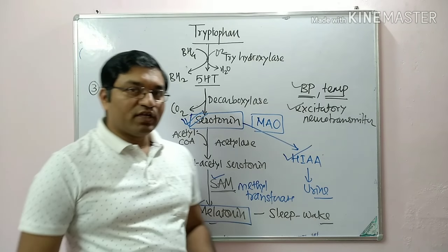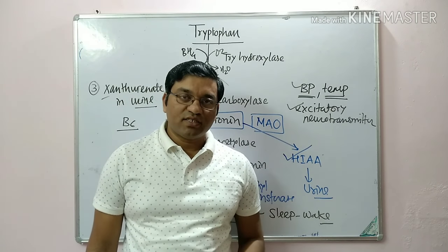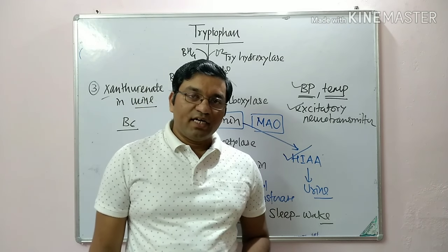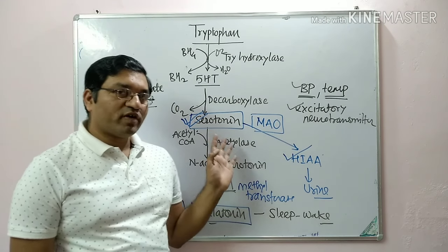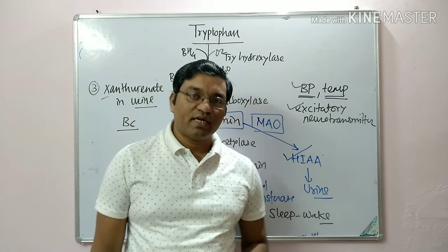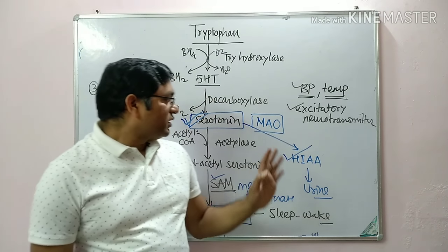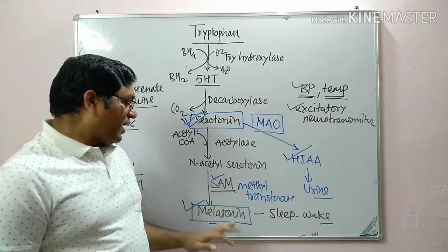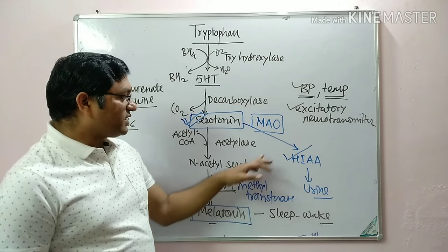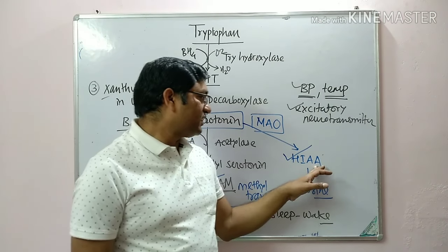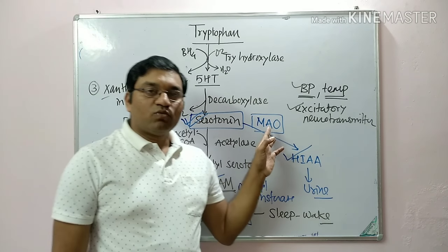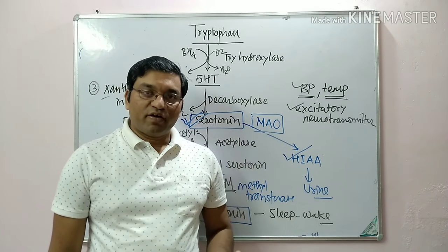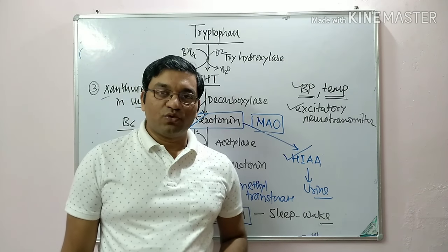In summary, tryptophan metabolism gives glucose and fat via the major pathway in the liver; 60 mg of tryptophan gives 1 mg of niacin (NAD and NADP); through the serotonin pathway it gives serotonin and melatonin; and it is excreted as hydroxyindole acetic acid, catalyzed by monoamine oxidase. That is all about tryptophan metabolism.